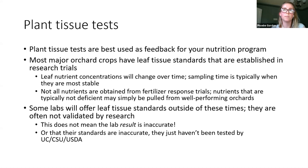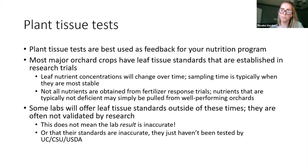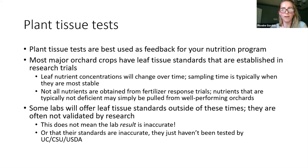Some labs will offer leaf tissue standards outside of standard times. For the crops I'm familiar with, it's going to be July leaf tissue samples. For almonds and pistachios, there's also an early prediction tool that's been validated by research. There's a difference between the result you get back from the lab—where they test a leaf and give you x percent nitrogen—and the standard they apply to tell you whether you are deficient or sufficient in a certain nutrient.